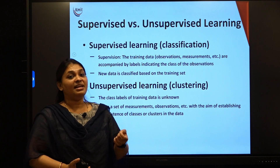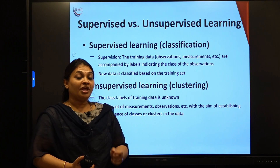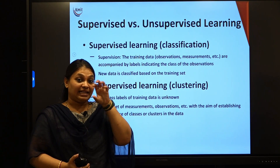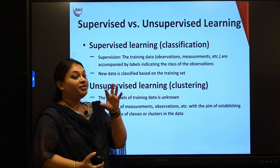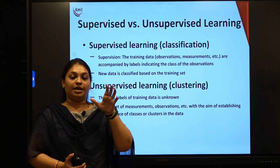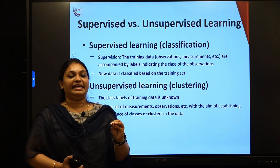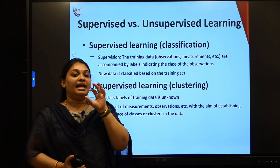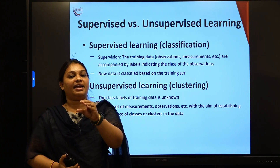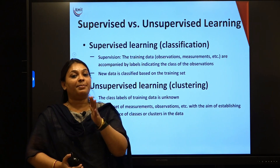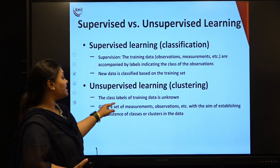Now coming to unsupervised learning — unsupervised learning uses unlabeled data and is about clustering. In clustering, you take different items and group them into smaller clusters. For example, if you have students from CSC, IT, AIML, and DS mixed together, to make a cluster I take all CSC students together, all IT students together, all AIML and DS students separately.